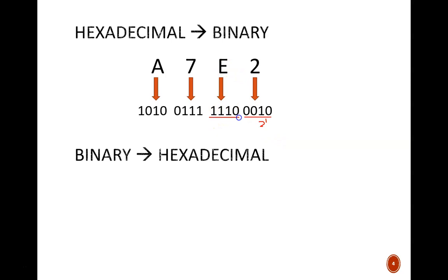Because that 1 has a weight of 2 to the 1 power. E corresponds to 1110. Why? Well, E is decimal 14. This leading 1 is going to have a weight of 8. The next one, a weight of 4. The next one, a weight of 2. You add those together, and you get a total of 14. So I just repeated this pattern for the remaining hex digits, and those are the binary results down below.